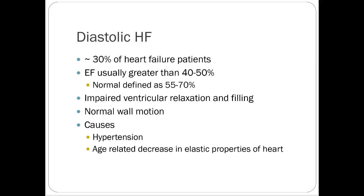Diastolic heart failure is not super common — it's about 30% of patients. Ejection fraction is usually greater than 40% to 50%; normal ejection fraction, by the way, is about 55% to 70%. There's impaired relaxation and filling of the ventricle with usually normal wall motion. This is more likely caused by chronic hypertension and is a more common presentation in the elderly with longstanding untreated hypertension building up and causing strain over a long period of time.